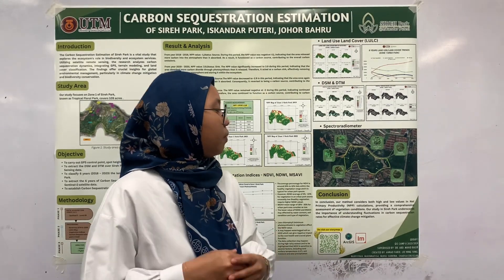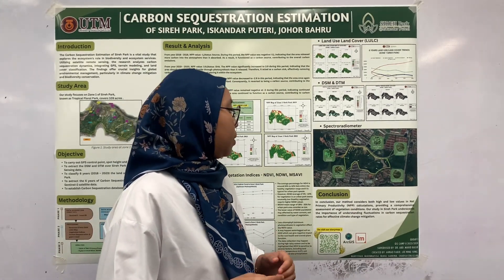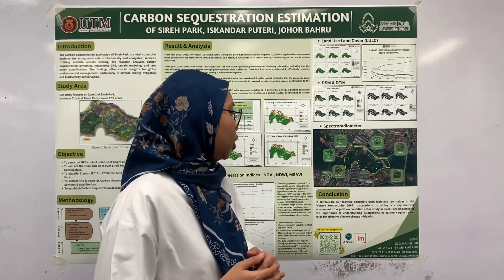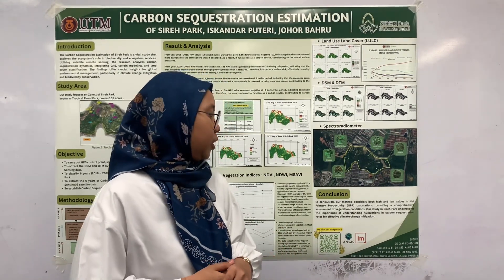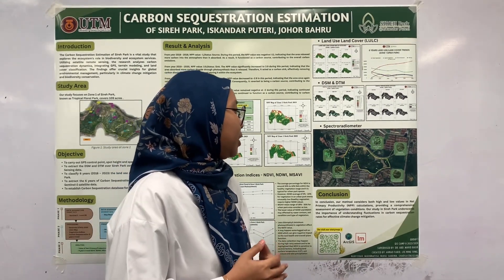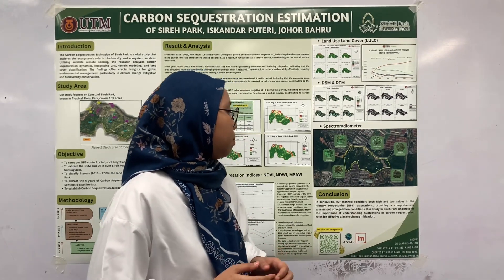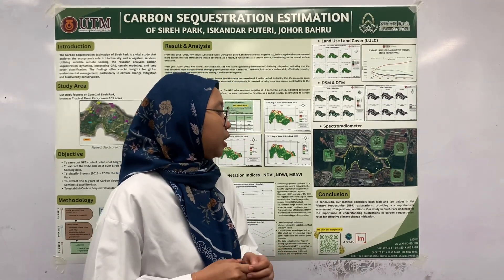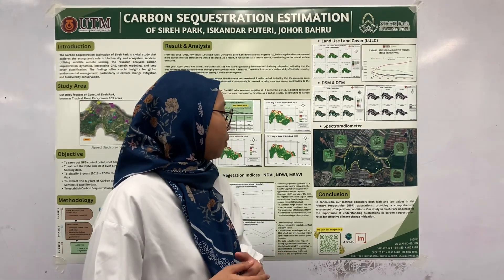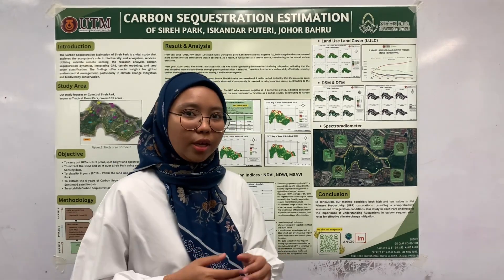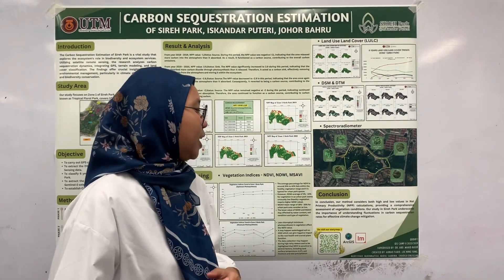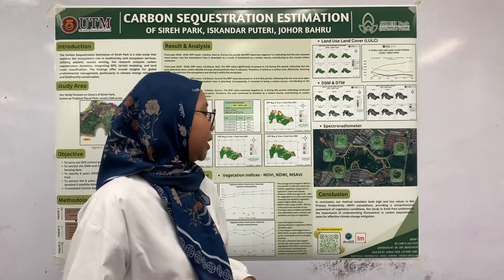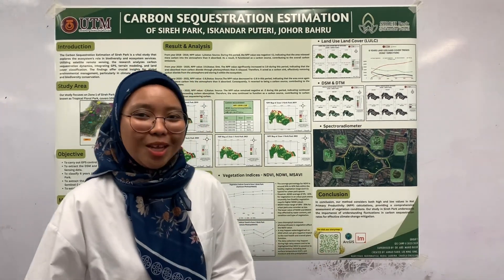In conclusion, our method considers both high and low values in net primary productivity (NPP) calculation, providing a comprehensive assessment of vegetation condition. Our study in Sirih Park underscores the importance of understanding fluctuations in carbon sequestration rates for effective climate change mitigation. For further information, you can visit our story map by scanning this QR code. Thank you.